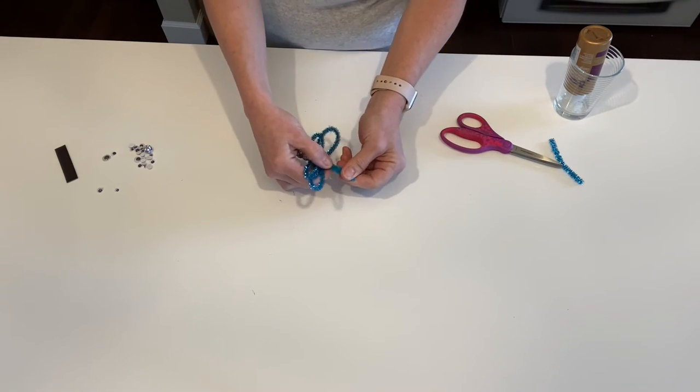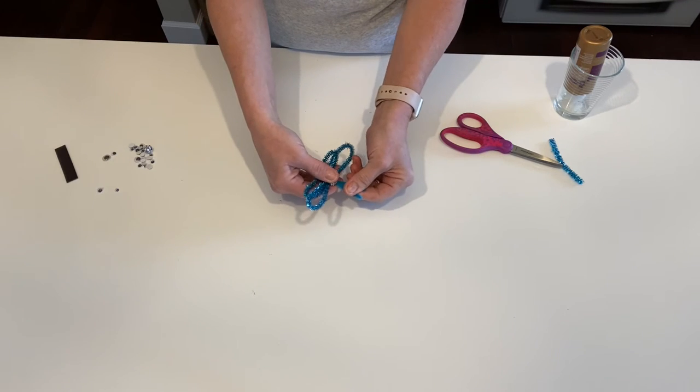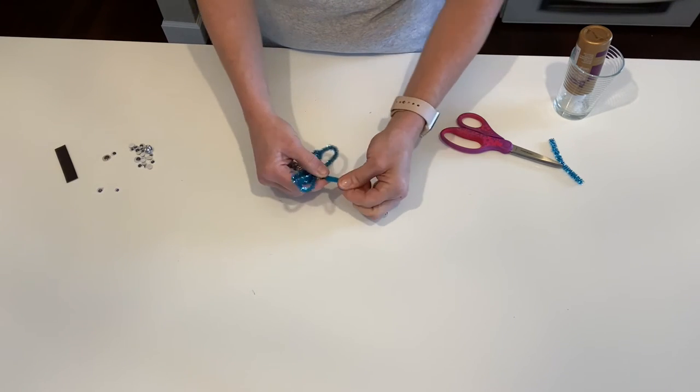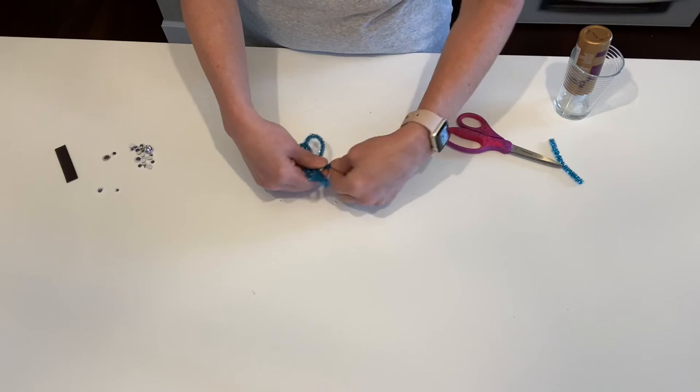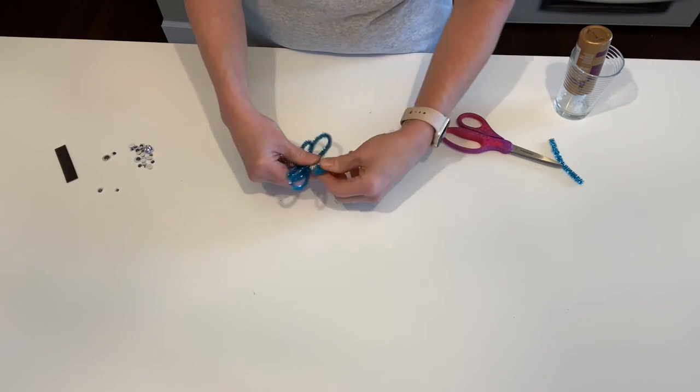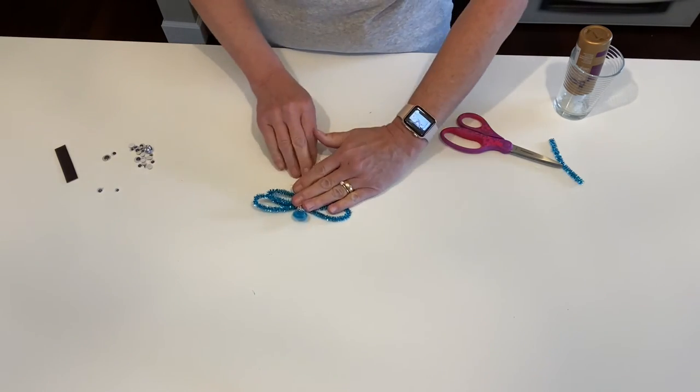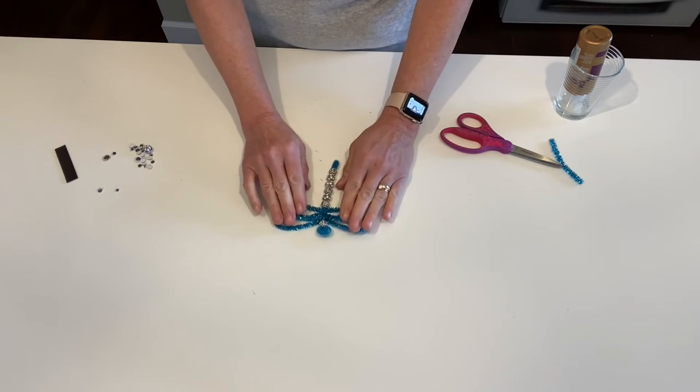Now hold it by that bead we just put on and take those two ends and turn them in on themselves flat like this, kind of rolling them into a circle. You're going to end up like that.